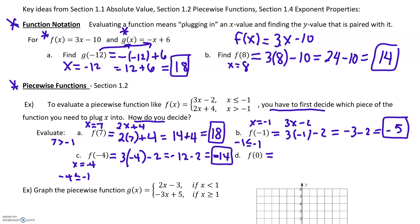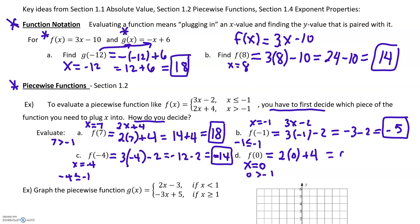Last one: f of 0. We look at our inequalities — is 0 less than or equal to negative 1? No. 0 is greater than negative 1, so we use the second rule: 2 times x plus 4. With x equals 0, we get 2 times 0 plus 4, which is 0 plus 4. Our answer is 4.